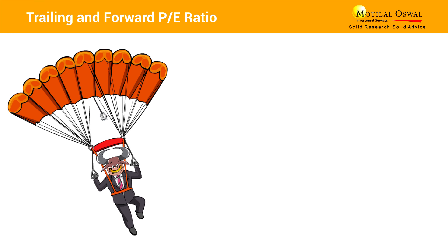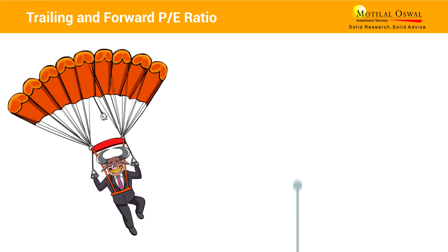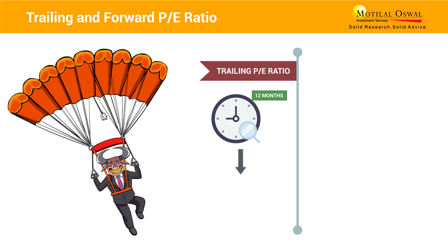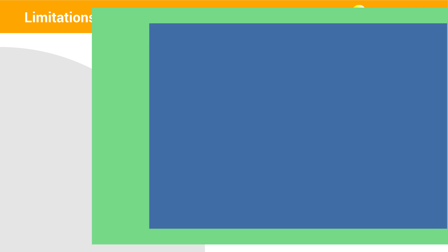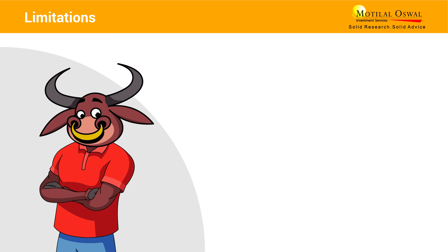Generally, there are two variations to the PE ratio. The trailing PE ratio uses the earnings of the last 12 months, while the forward PE ratio uses the expected earnings for the next 12 months. As this requires estimating the forward earnings, it is prone to estimation errors.